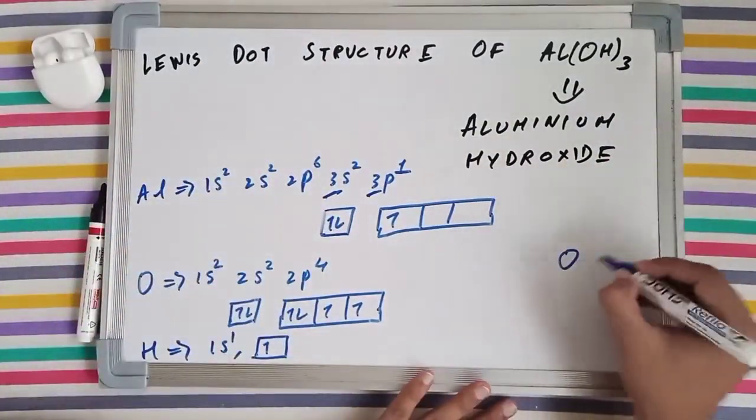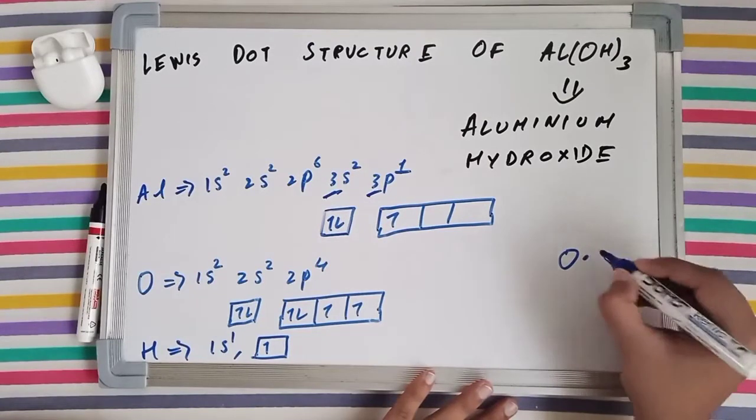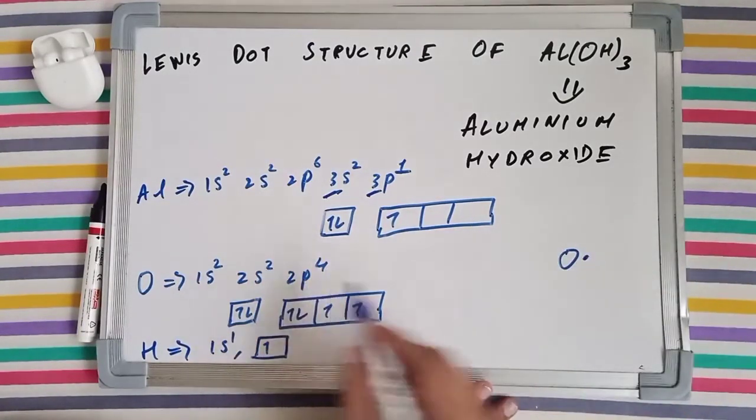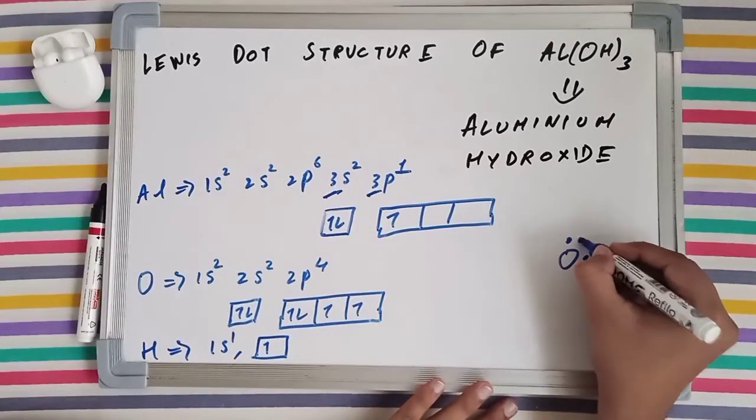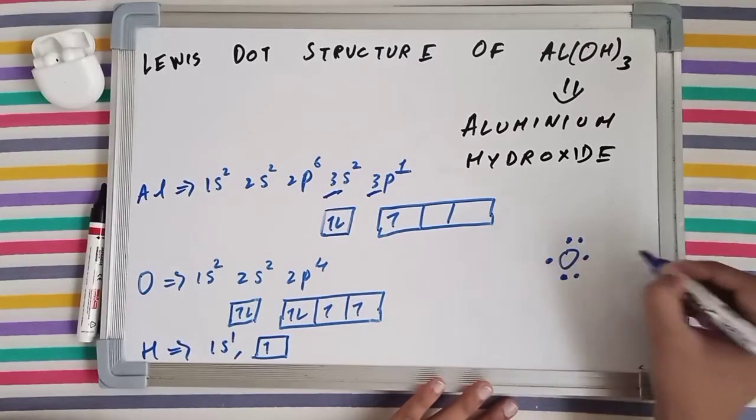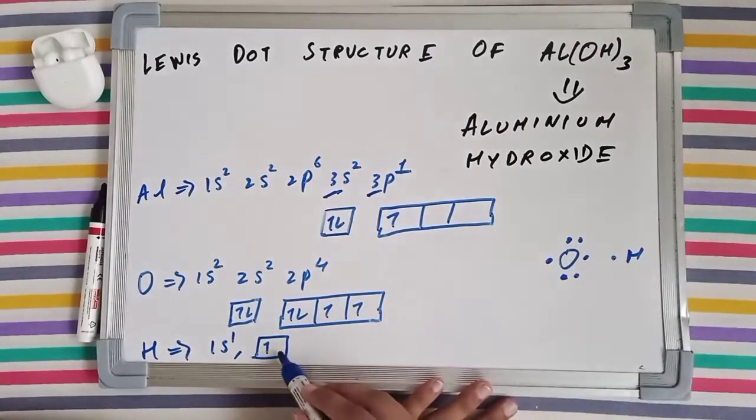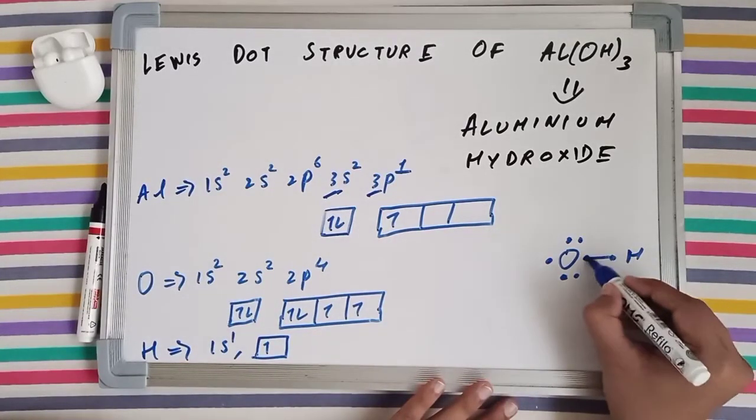So you've got OH. First we are going to draw OH. Oxygen has 6 valence electrons - 2 plus 4, 6. So I'm going to draw 1, 2, 3, 4, 5, 6. Hydrogen has just a single valence electron. They are making single bonds with each other.